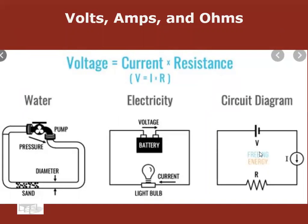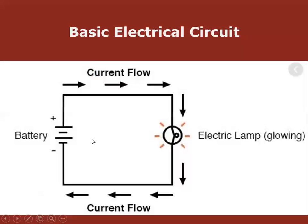Water flowing through a pipe: the pump pressurizes the water — that's voltage. The water is the amperage. Using sand as resistance, the pump has to work hard to push the amperage through the resistance and back to the other side. Power flows from the positive, voltage pushes it, amperage does the work through the resistor, and returns to the battery.